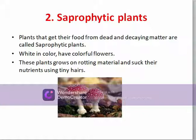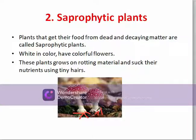The second type is saprophytic plants — plants that get their food from dead and decaying matter are called saprophytic plants. These plants are white in color but their flowers are colorful. They grow on rotting material and absorb nutrients using tiny hair-like structures. A mushroom is an example; it uses these tiny hairs in rotting areas to get nutrition from the soil and other dead decaying matter.